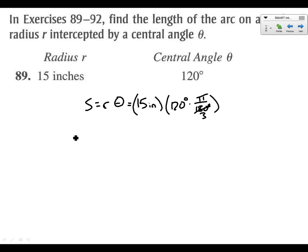So we'll cancel. That's 3 and 2. And so we've got 30 pi over 3. So we've got 10 pi inches.